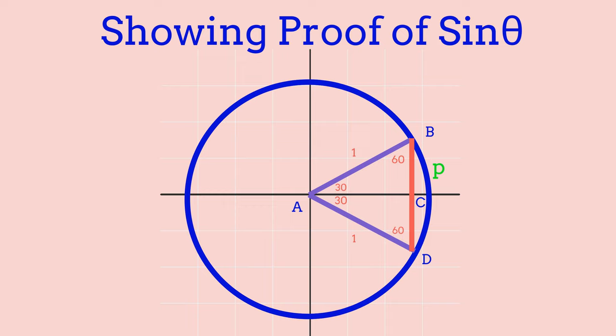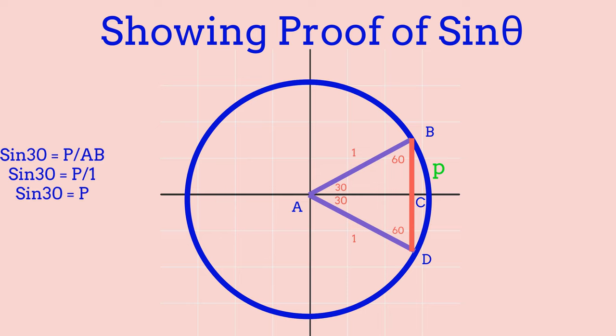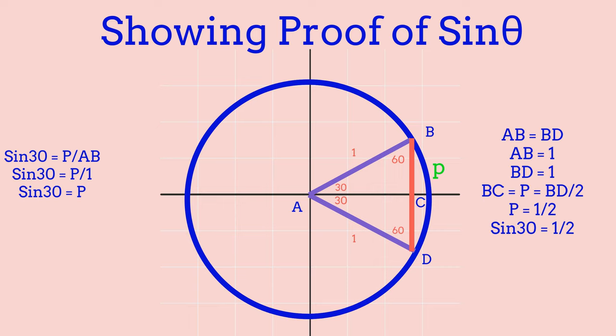Our equation is: sin 30 equals P over H. Since H equals 1, substituting gives sin 30 equals P divided by 1, which simplifies to sin 30 equals P. From the equilateral triangle, side AB equals BD, so BD is 1. Therefore P equals 1 over 2, giving us sin 30 equals 1/2. In the same way, you can also derive values for sin 45, sin 60, and sin 0 and sin 90 are already obvious.